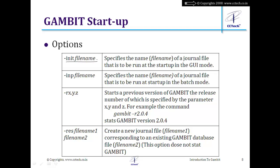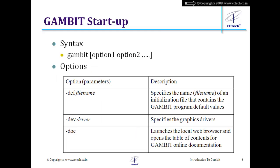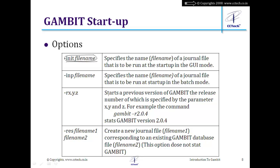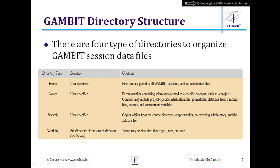Using -init, GAMBIT will process everything automatically by reading the commands in the journal file. In the options form, you specify -init followed by the journal file name. There are also associated directories: a home directory, source directory, scratch directory, and working directory.